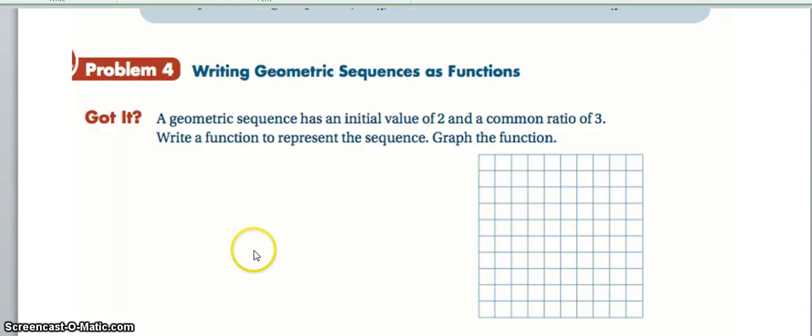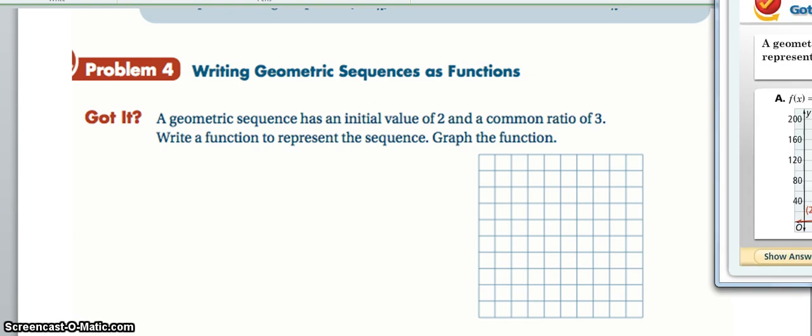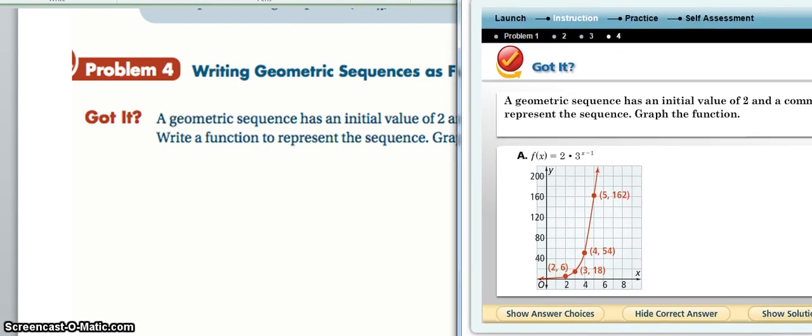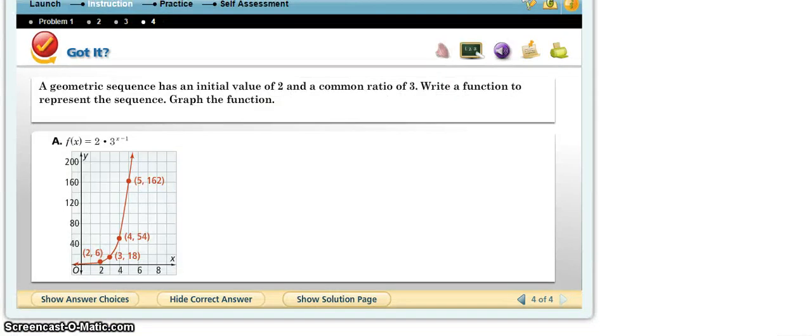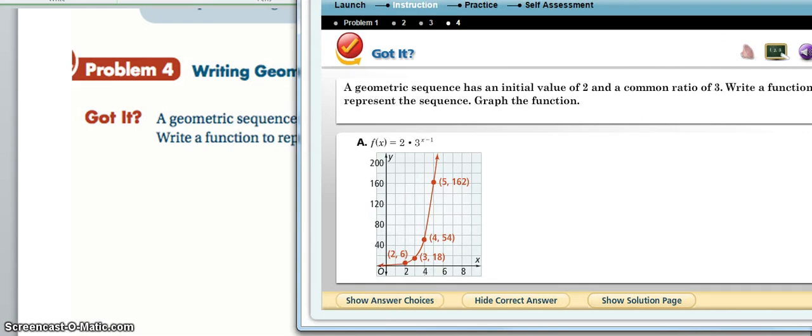So pause and then try to graph the first five points. The first point is actually going to be pretty tough to graph, but at least graph points two through five for this graph. Pause and try now. Again, I am very bad at drawing these graphs on the smart tab, especially since this is a curve. So here is what the graph would look like.